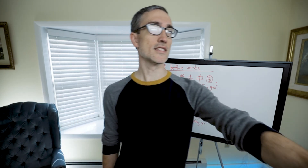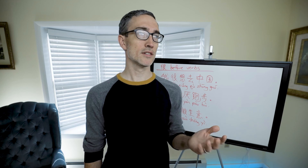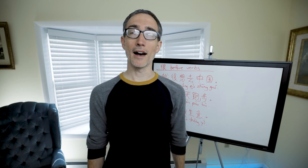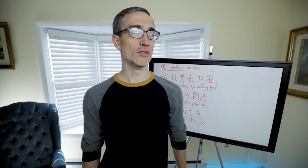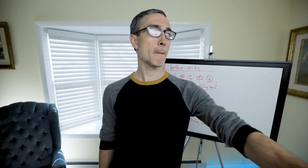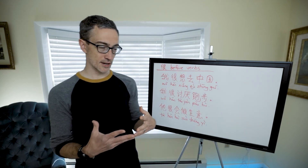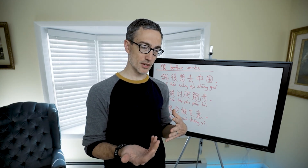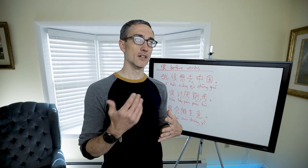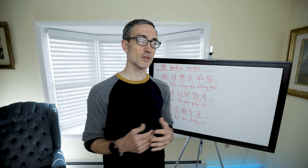Examples of verbs that can take 'hěn': to think or want to, to miss, to like, to be careful, to be afraid, to know a lot about or learn about something, to hate or really dislike something, to worry about something, to hope for something, to be able to do something, to know how to do something, or for something to be possible.